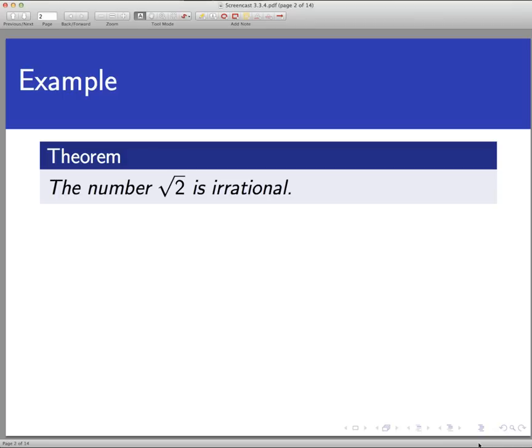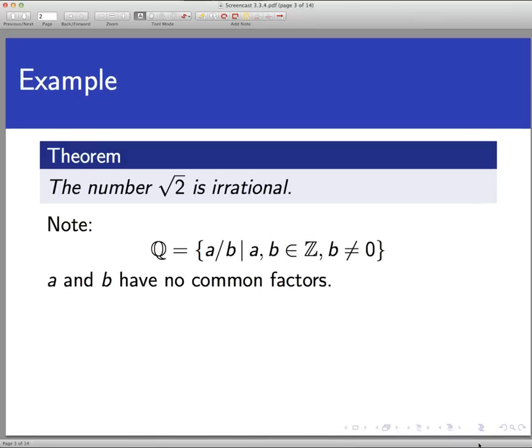The other thing before we begin is related to that, and that is we need to have a very clear idea before we set out of what a rational number is before we try to prove that the square root of 2 is not one of them. Recall the definition and keep it very close to heart here. A rational number is any number that can be written as a fraction of two integers, a and b, with b in the denominator not equal to zero.